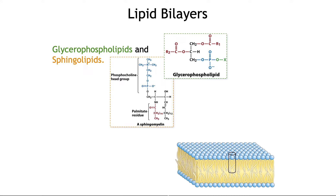In our last video we discussed triglycerides as storage lipids — basically three fatty acids esterified to the alcohol groups of glycerol. In this video we're going to explore structural lipids that are part of membrane lipids. We can classify membrane lipids in general as phospholipids, glycolipids, or archaeaether lipids, and we're going to focus on phospholipids and glycolipids.